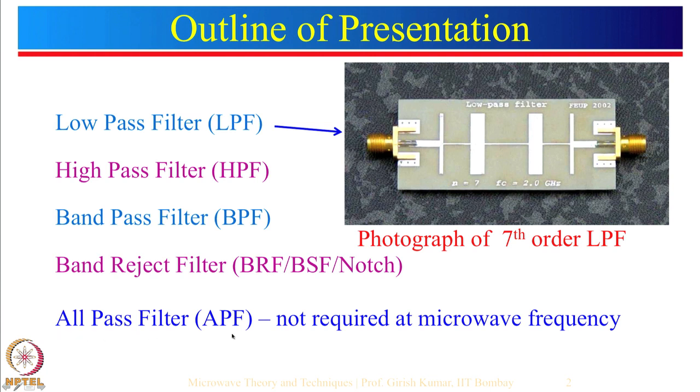We never ever design an all pass filter at microwave frequency. The reason is that all pass filters are generally designed to provide a phase delay, but at microwave frequency we can provide the phase delay simply by using a line length. For example, if you want a 90 degree phase delay at 1 GHz, the wavelength is 30 cm, so lambda by 4 is 7.5 cm. At 1 MHz, the wavelength would be 300 meters, so lambda by 4 would be 75 meters — and you do not want a PCB 75 meters long. That is why all pass filters are designed at lower frequencies, but never at microwave frequency.